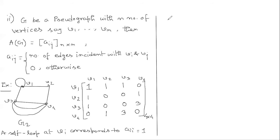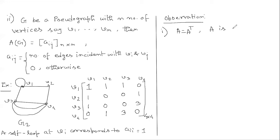Regarding observations: First, the adjacency matrix of a pseudo-graph is also symmetric — A equals A transpose. For example, the 1,2 position is 1 and the 2,1 position is also 1; the 1,3 position is 1 and the 3,1 position is also 1, and so on. Second, since this is a pseudo-graph, the diagonal entries are not necessarily zero, because it may contain self-loops.